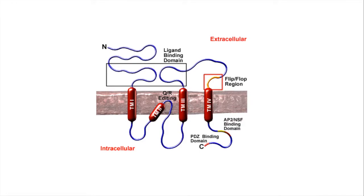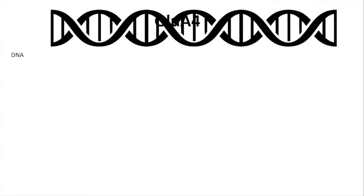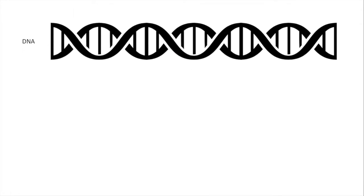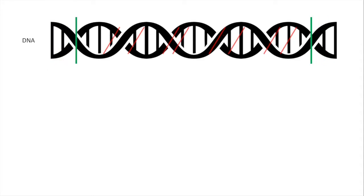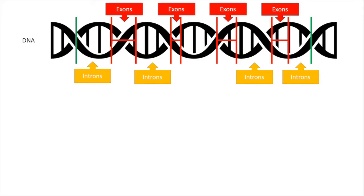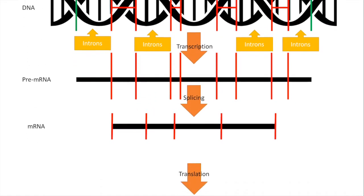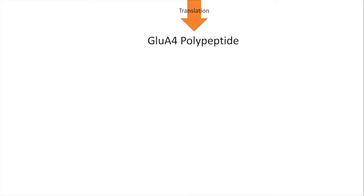Let me explain how AMPA receptors get these variations. For example, let's use GluA4 gene. Here we have GluA4 gene in the DNA. This green region marks the gene. The red regions show the exons, and the rest are introns. After transcription, pre-mRNA is made with both introns and exons. After splicing, only exons remain. After translation, you have your GluA4 polypeptide.